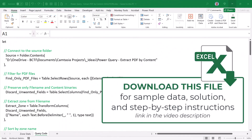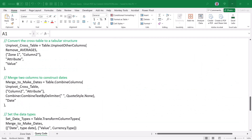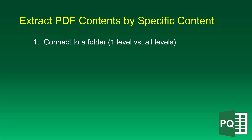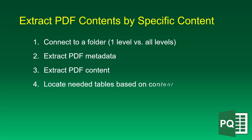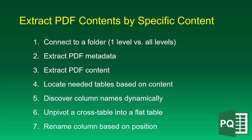Download the solution file for a full explanation of all the M code. To extract PDF contents by specific content, the major steps are: connect to a folder and scan it or limit to the current folder; extract the PDF metadata to find all tables; extract the content from those tables; discover which tables we need based on a keyword; then discover column names dynamically so you're not boxed in if names differ; combine all tables into a flat table by unpivoting; and apply column names by position rather than hard-coded names.